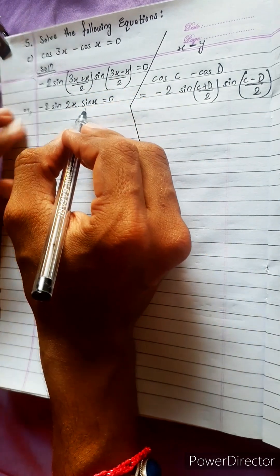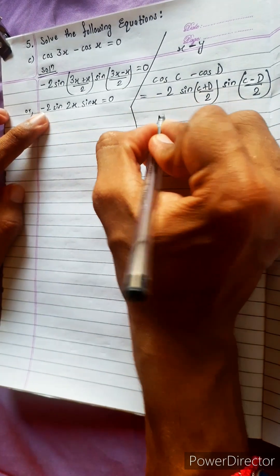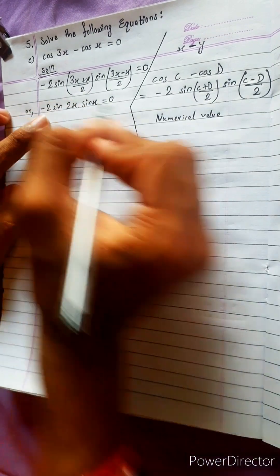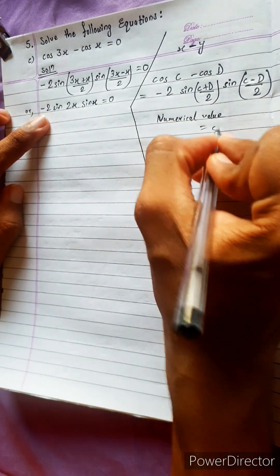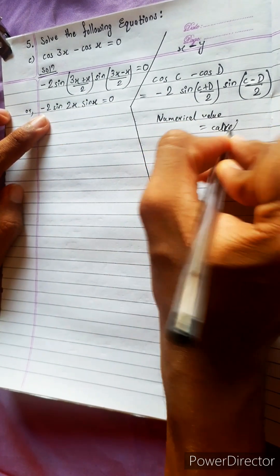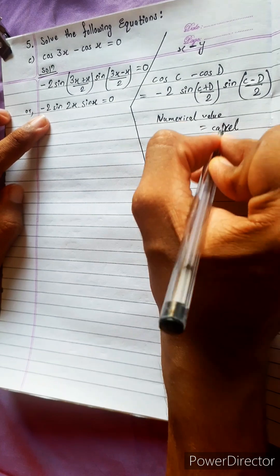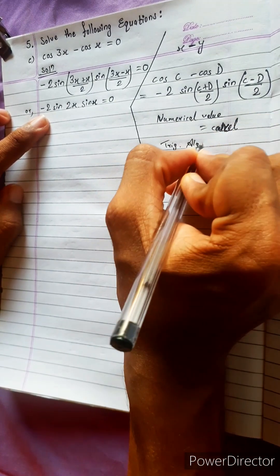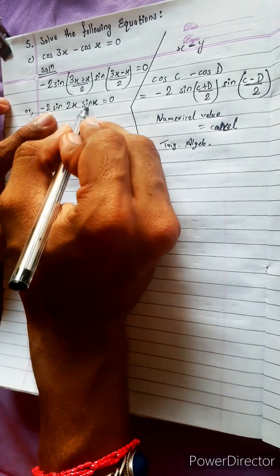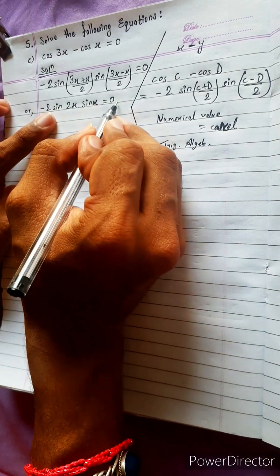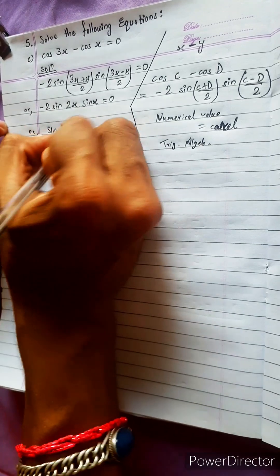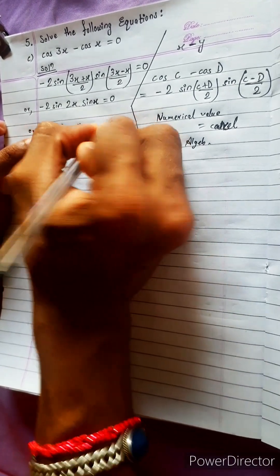Now, the numerical value — we can remove this and take it to this side so it will cancel. But we cannot cancel those trigonometric or algebraic values. Like, we cannot take sin x to this side and make it 0.